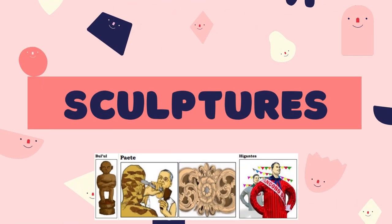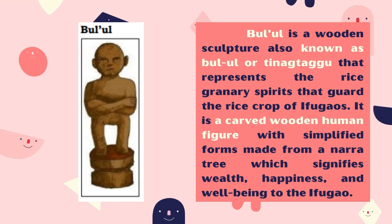Sculptures: the art of making two- or three-dimensional representative or abstract forms, especially by carving stone or wood or by casting metal. Bul'ul is a wooden sculpture also known as Bul'ul or Tinagtagu that represents the rice granary spirits that guard the rice crops of Ifugao. It is a carved wooden human figure with simplified forms made from a narra tree, which signifies wealth, happiness, and well-being to the Ifugao.